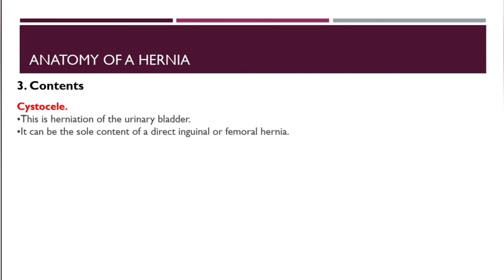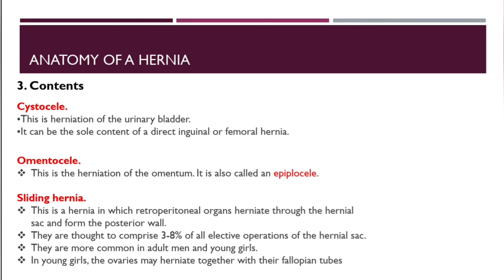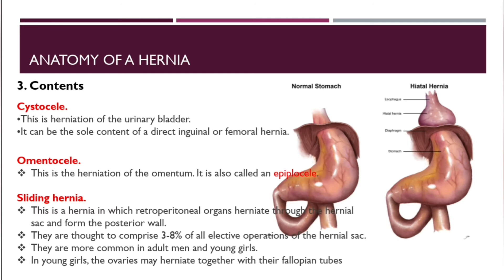A cystocele is a herniation of the urinary bladder and can be the sole content of a direct inguinal hernia or femoral hernia. An omentocele is a herniation of the omentum, also known as a epiplocele. A sliding hernia is a hernia in which retroperitoneal organs herniate through the hernial sac and form the posterior wall. They are thought to comprise three to eight percent of all elective hernia operations, and are more common in adult men and young girls; in young girls, ovaries may herniate together with the fallopian tubes.